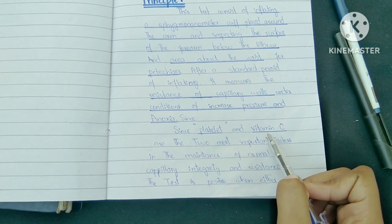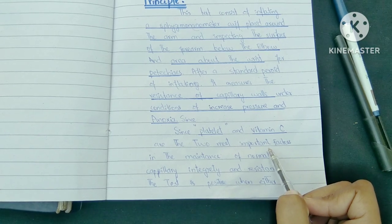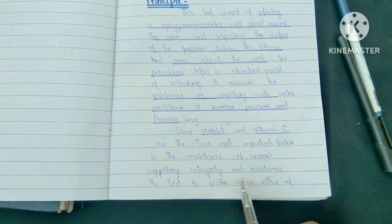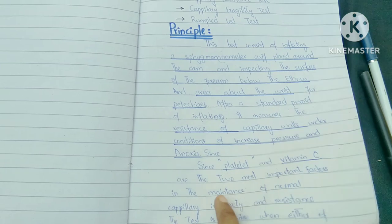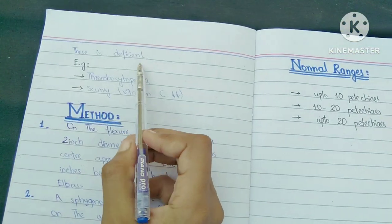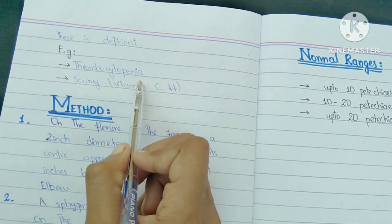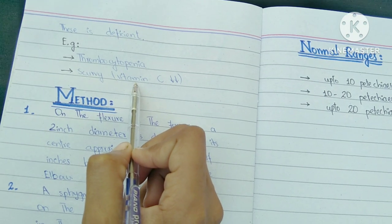Since platelets and vitamin C are the two most important factors in the maintenance of normal capillary integrity and resistance, the test is positive when either of these is deficient. For example, thrombocytopenia and deficiency of vitamin C.